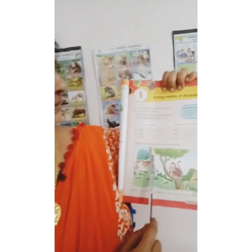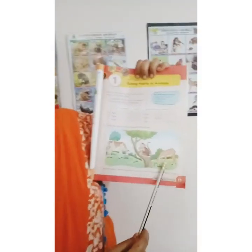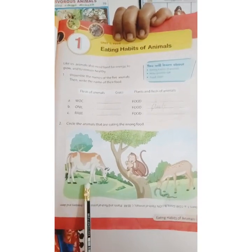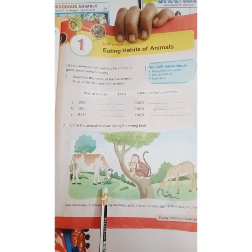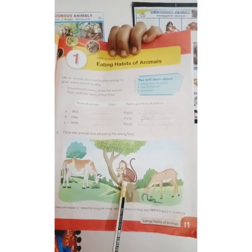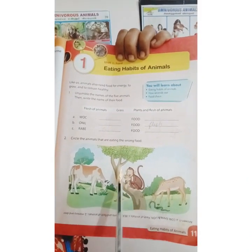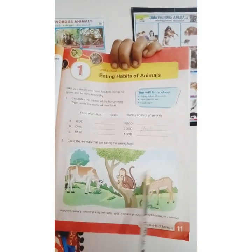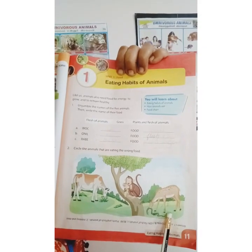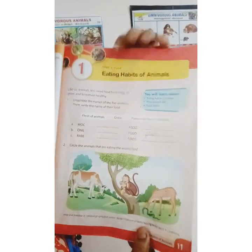Circle the animals that are eating the wrong food. The first picture shows a cow — it eats the correct food, plants only. Next, a monkey is shown eating wrong food, so you circle it. Next, a deer is shown eating a snake — but deer is a plant-eating animal, so you circle this animal too.